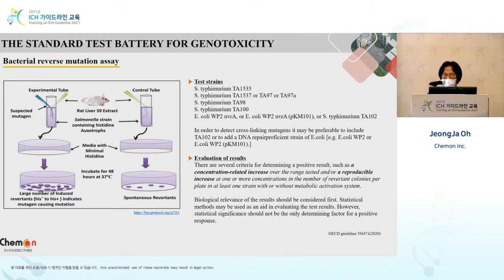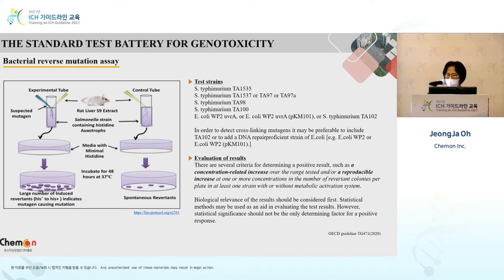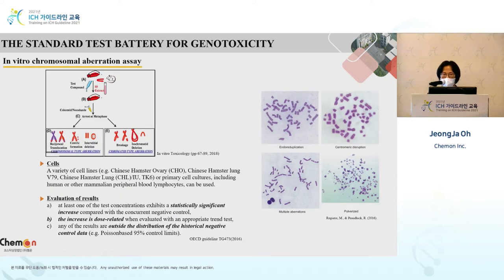For the bacterial reverse mutation assay, you are most likely familiar with this test. Using five bacterial strains, the test is done. The test compound is mixed and colony numbers are compared. When there is a bacterial reverse mutation compared to negative control, there will be an increase in numbers — that increase tells you the results. Following the guideline, TA100 or other types could be selected as test strains. The evaluation of results considers whether there is a concentration-related increase or reproducible increase; in this case the result is positive. In the current bacterial reverse mutation assay, statistical analysis is not applied.